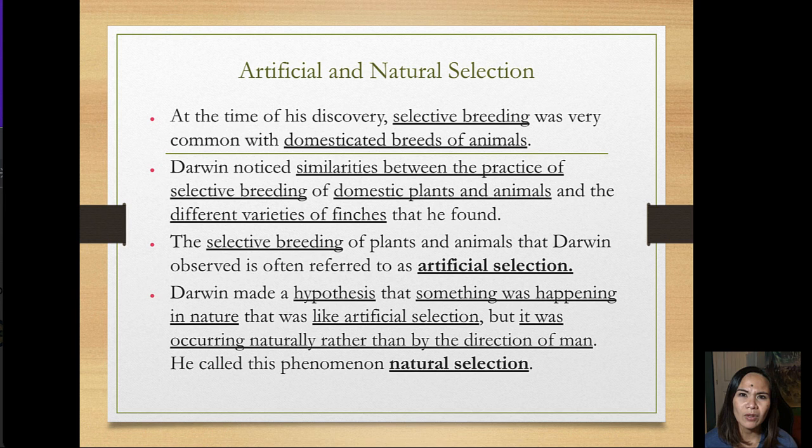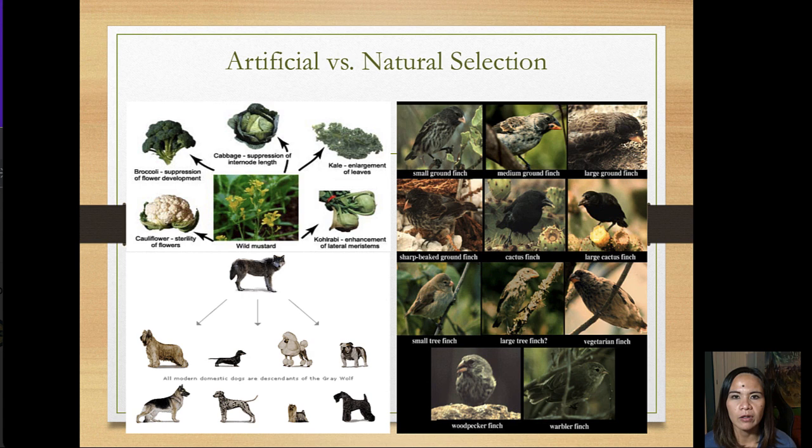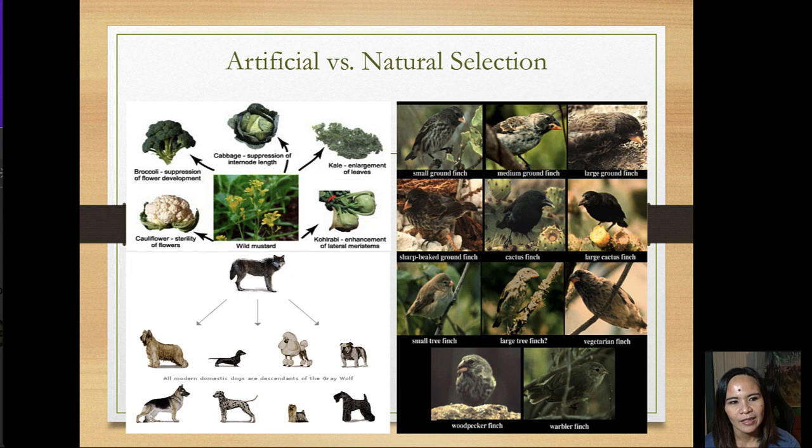The selective breeding of plants and animals that Darwin observed is often referred to as artificial selection. Darwin made a hypothesis that something was happening in nature that was like artificial selection, but occurring naturally rather than by the direction of man. He called this phenomenon natural selection.